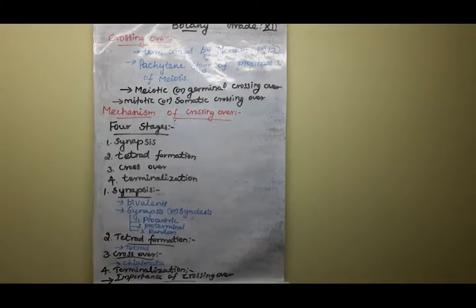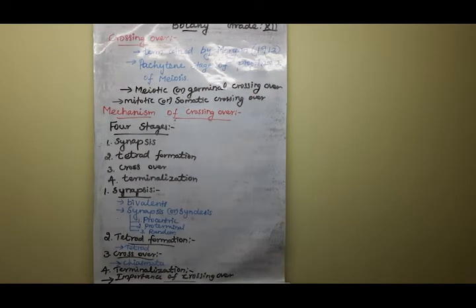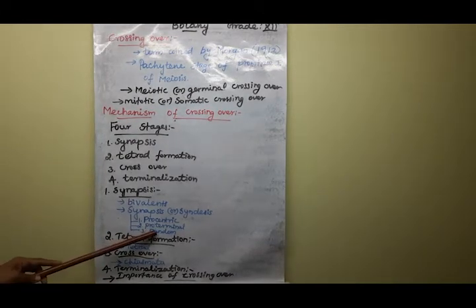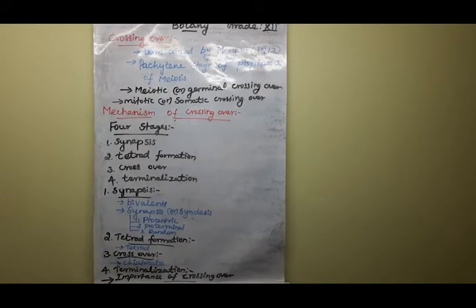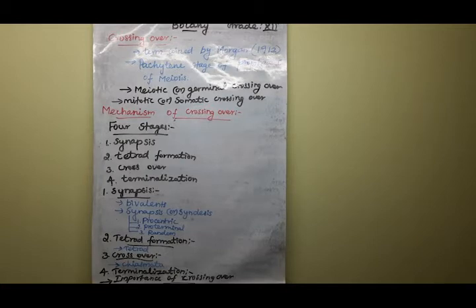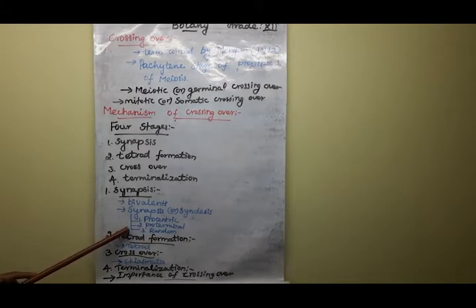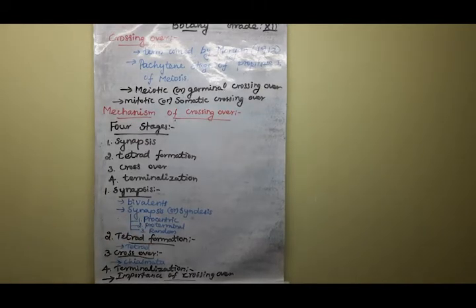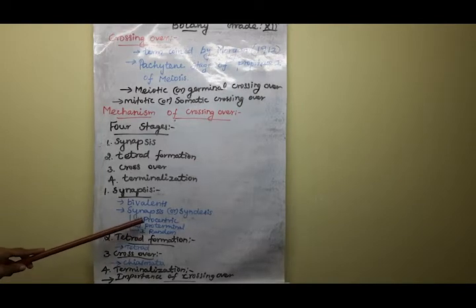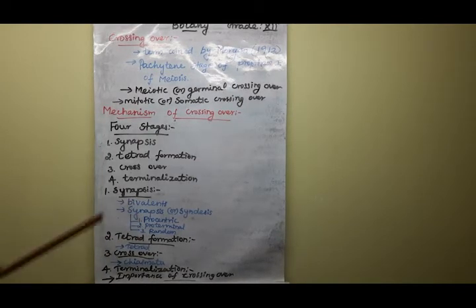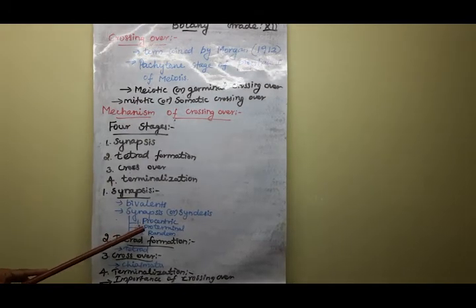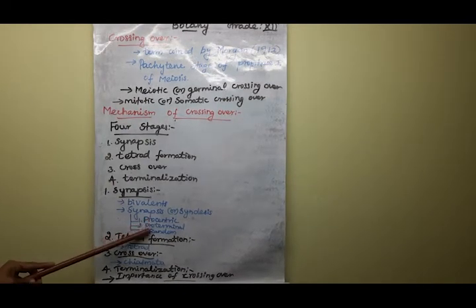What are the three types of synapsis? First is procentric synapsis, second is proterminal synapsis, and third is random synapsis. These three types refer to the position where the pairing of chromosomes begins. Procentric means the pairing starts from the central or middle region of the chromosome.